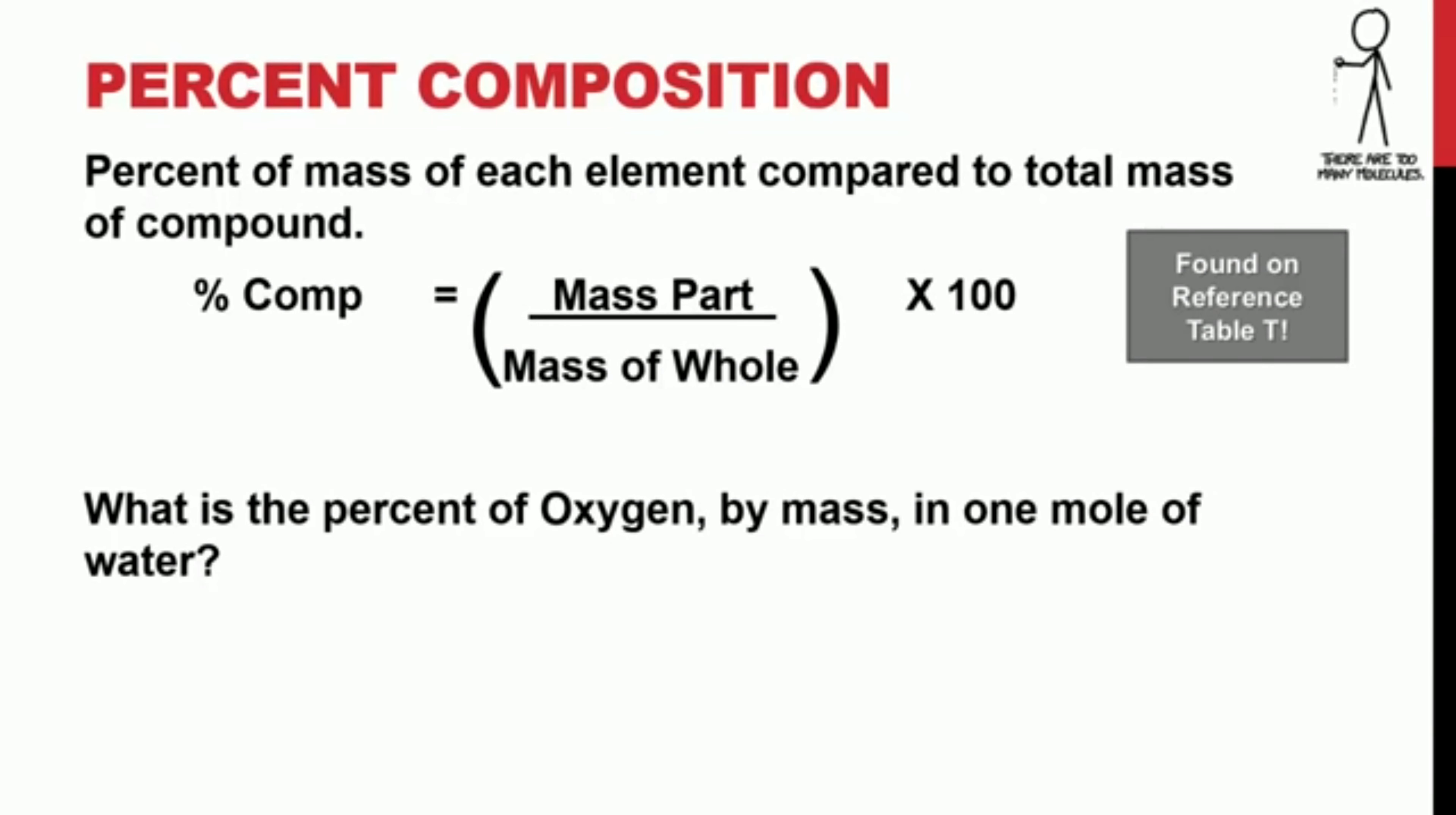Percent by mass of a compound is defined by an equation found on reference table T. That means you don't need to memorize it. It is the mass of the part, or the element in the compound, divided by the mass of the whole, or the entire gram formula mass of the compound.